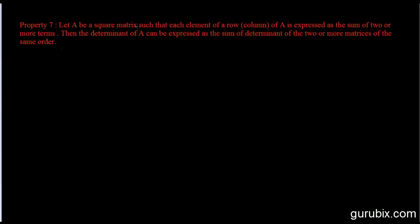Let A be a square matrix such that each element of a row or column of A is expressed as the sum of two or more terms. Then the determinant of A can be expressed as the sum of determinants of two or more matrices of the same order.